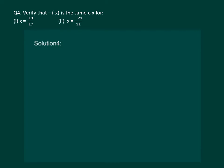Let us read the question. Verify that minus of minus x is same as x for x equal to 13 by 17 and for x equal to minus 21 by 31. Let us try to understand the question. We have to verify that minus of minus x is equal to x, or in other words, we have to verify that additive inverse of minus x is x.